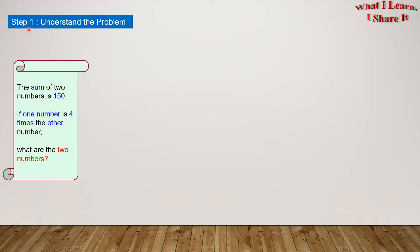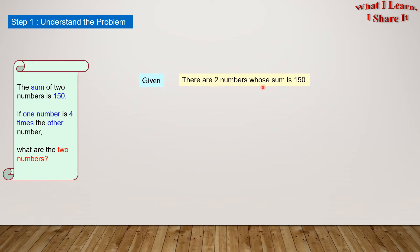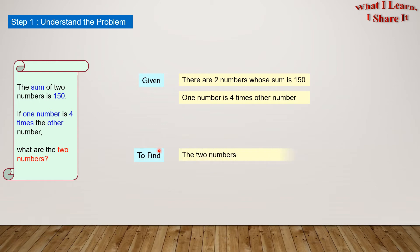Step 1: Understand the problem. What is given to us? We are given that the sum of two numbers is 150, and one number is four times the other number. In our own words: there are two numbers whose sum is 150, and one number is four times the other. What is there to find? We have to find the two numbers.